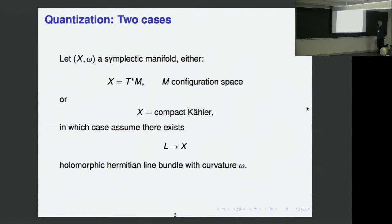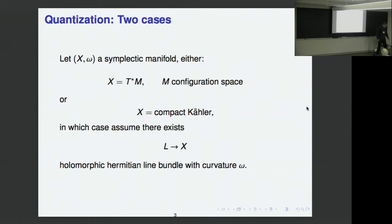Or, perhaps more interestingly for this audience, X is a compact Kähler manifold, which means X has a complex polarization. In that case, if X is Kähler, we assume that its symplectic form is integral, so that there is a holomorphic Hermitian line bundle L with curvature equal to the symplectic form. This will be needed to talk about Hilbert spaces.